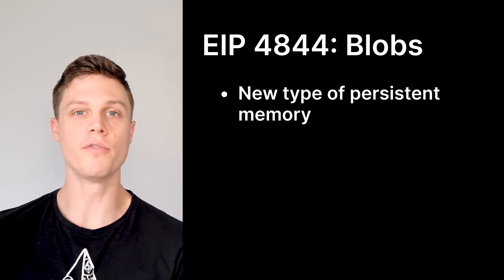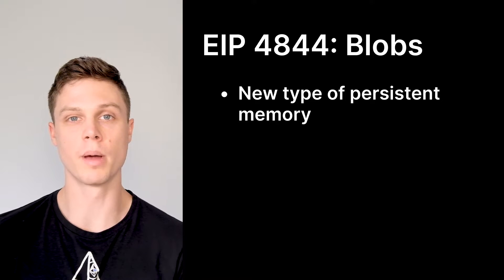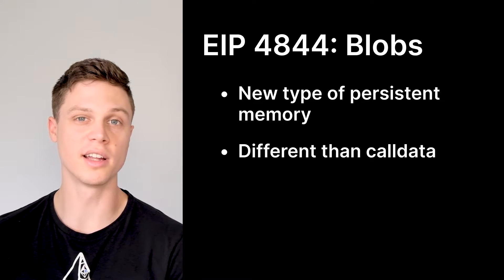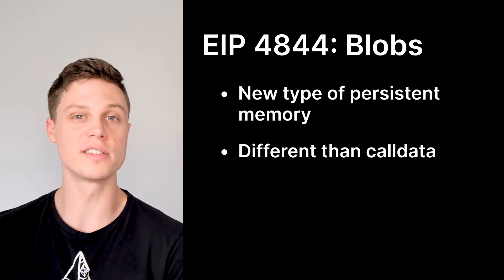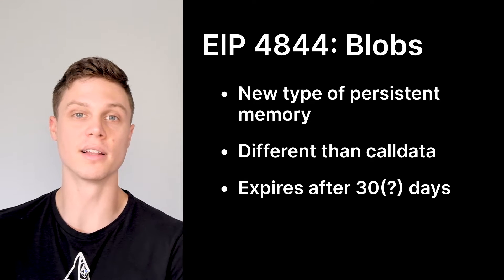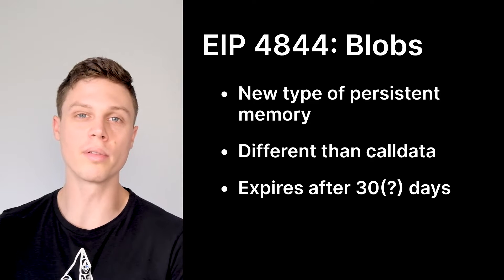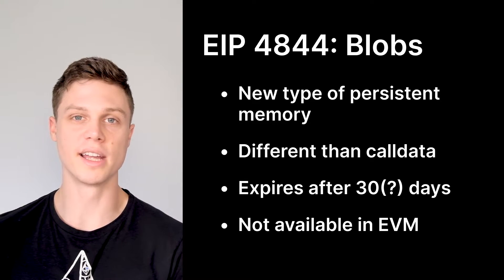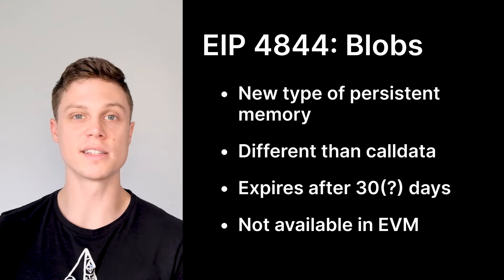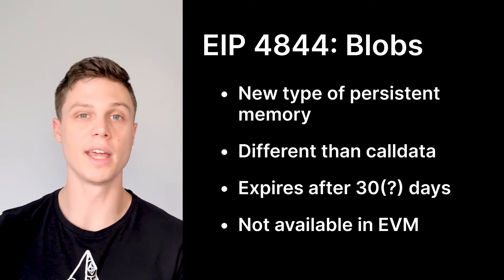So how is this actually possible? EIP 4844 adds a new type of persistent memory called a blob to the Ethereum network. The current type of persistent Ethereum data, called call data, is expensive because it's stored on every single node and stored forever. This new type of memory would have an expiration date where it would automatically be deleted — probably anywhere between 30 days to a few months. The other unique thing about this data is that unlike call data, it would not be available in the EVM. Instead, it would only exist on nodes in the consensus layer instead of the execution layer. This means that if you wanted to write an on-chain Ethereum smart contract that uses data from within a specific blob, you would not be able to — at least not directly.